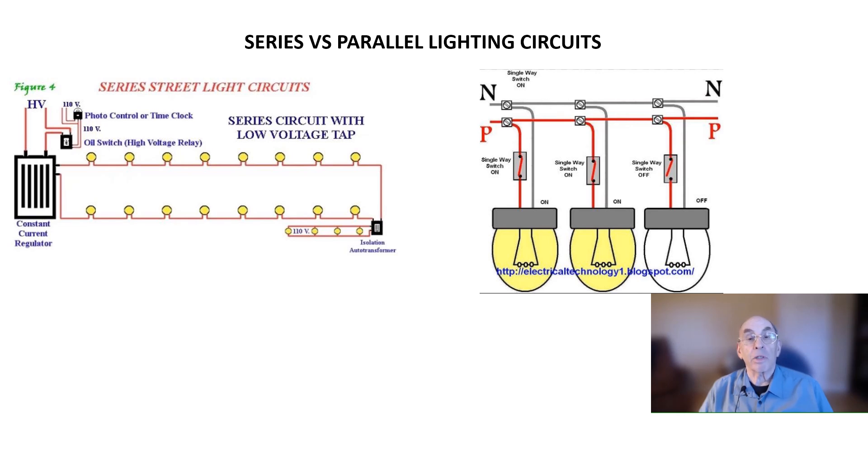electrical engineers in the late 19th century invented a transformer that automatically adjusts its output voltage to the right value. This device was called a regulated output constant current transformer, or just an RO transformer for short.